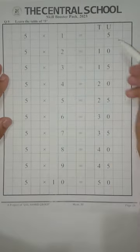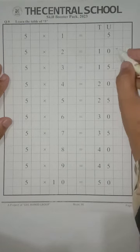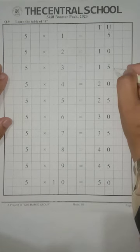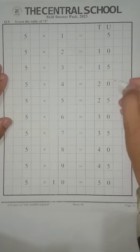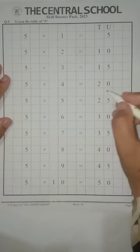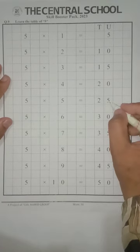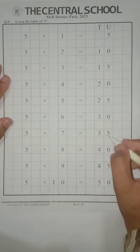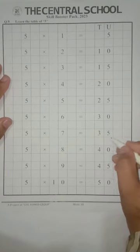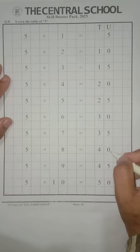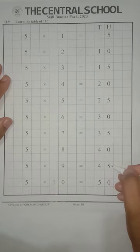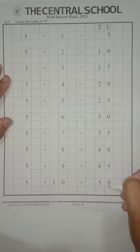Five ones are five. Five twos are ten. Five threes are fifteen. Five fours are twenty. Five fives are twenty-five. Five sixes are thirty. Five sevens are thirty-five. Five eights are forty. Five nines are forty-five. Five tens are fifty.